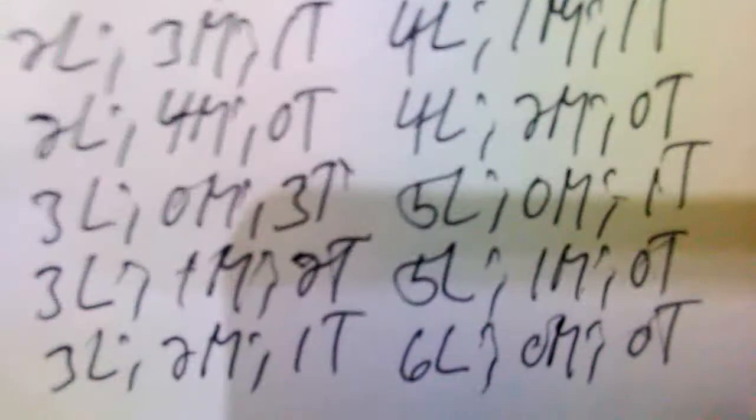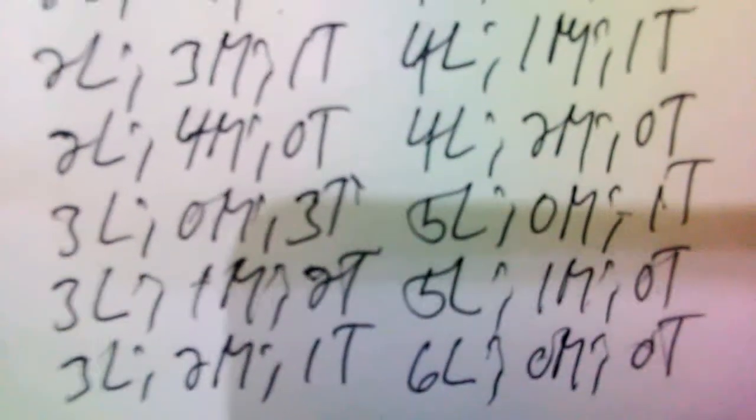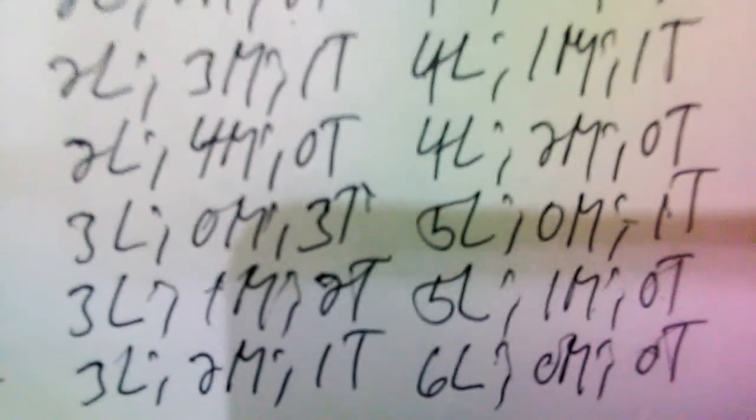Additional LMT classifications include: 2 low, 1 middle, 4 top; 2 low, 0 middle, 5 top; 1 low, 1 middle, 4 top; and 6 low, 0 middle, 0 top.